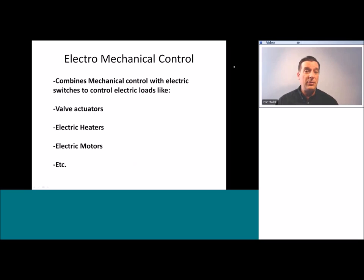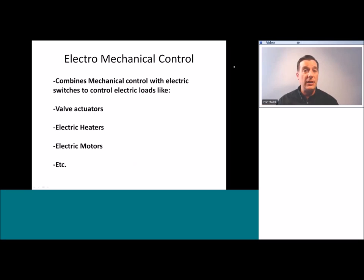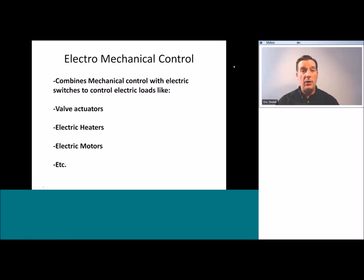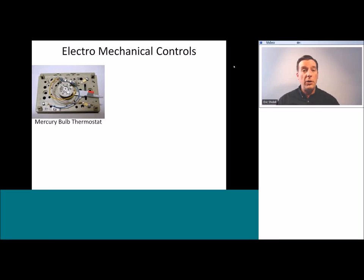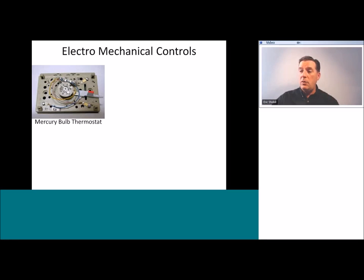The next level of control that has begun to replace mechanical is electromechanical, building off of what came before. Electromechanical control combines the mechanical sensing element — something moving in response to temperature — with an electric switch. So now instead of that movement directly operating a valve, it operates a switch, which can then electrically control a valve, motor, or heater. A good example is the mercury bulb style thermostat, where a temperature-sensitive bimetal coil moves in response to temperature changes, causing an electric mercury switch to make or break a set of electrical contacts.